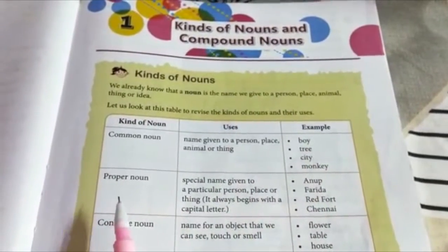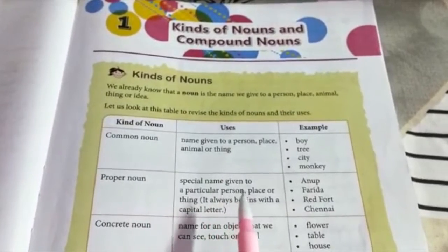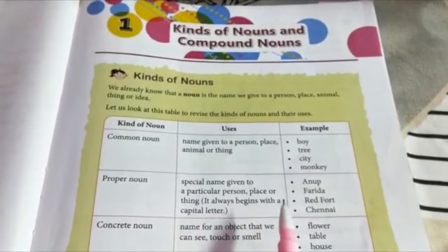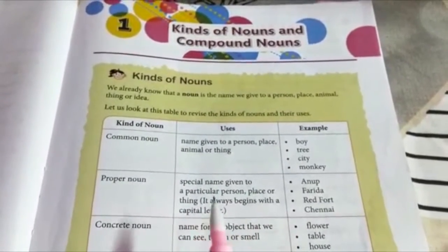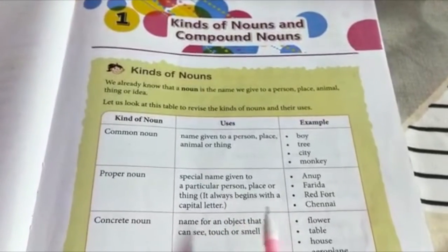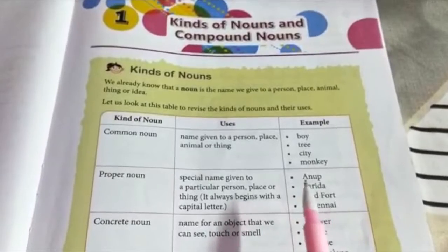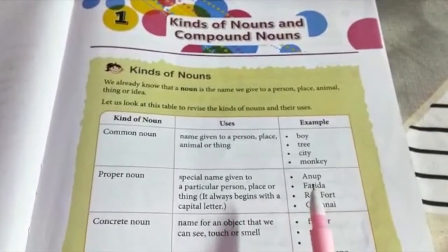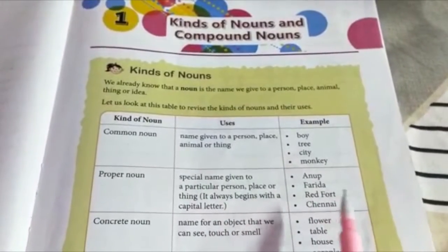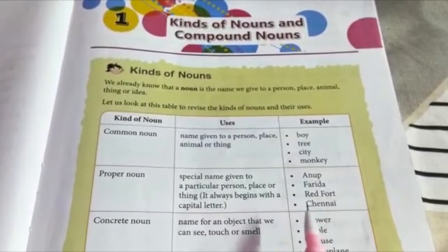Proper noun. A proper noun is the special name given to a particular person, place or thing. Remember, it always begins with a capital letter. For example: Anup — Anup is the specific name given to a boy. Farida, Redfoot, Chennai.